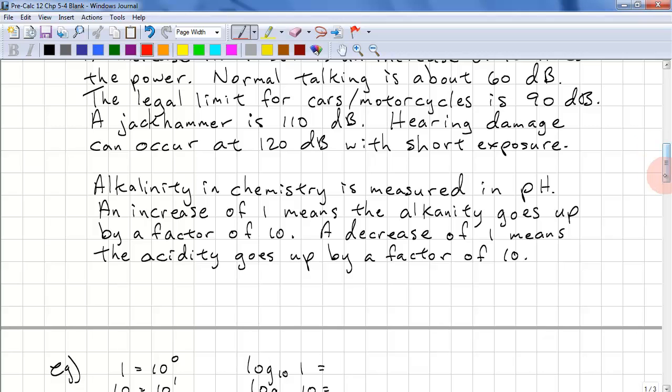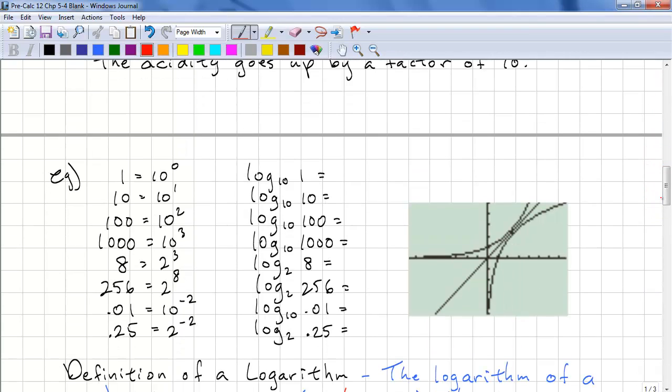Let's look at some actual numerical examples. 1 is equal to 10 to the power of 0. 10 is equal to 10 to the power of 1. 100 is equal to 10 to the power of 2. Let's see if you notice a pattern here. Log 10 of 1 is 0. Log 10 of 10 is 1. Log 10 of 100 is 2. Log 10 of 1000 is 3. So what you should be noticing is that the log of the value is equal to the exponent of the base.